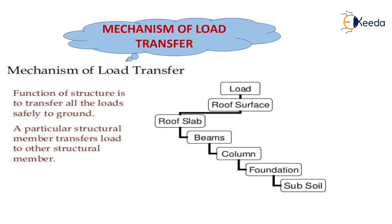Now we are seeing this flow chart. In this flow chart, load is transferred from roof surfaces to roof slab, then from roof slab to beam, from beam to column, from column to foundation, and finally from foundation to subsoil.